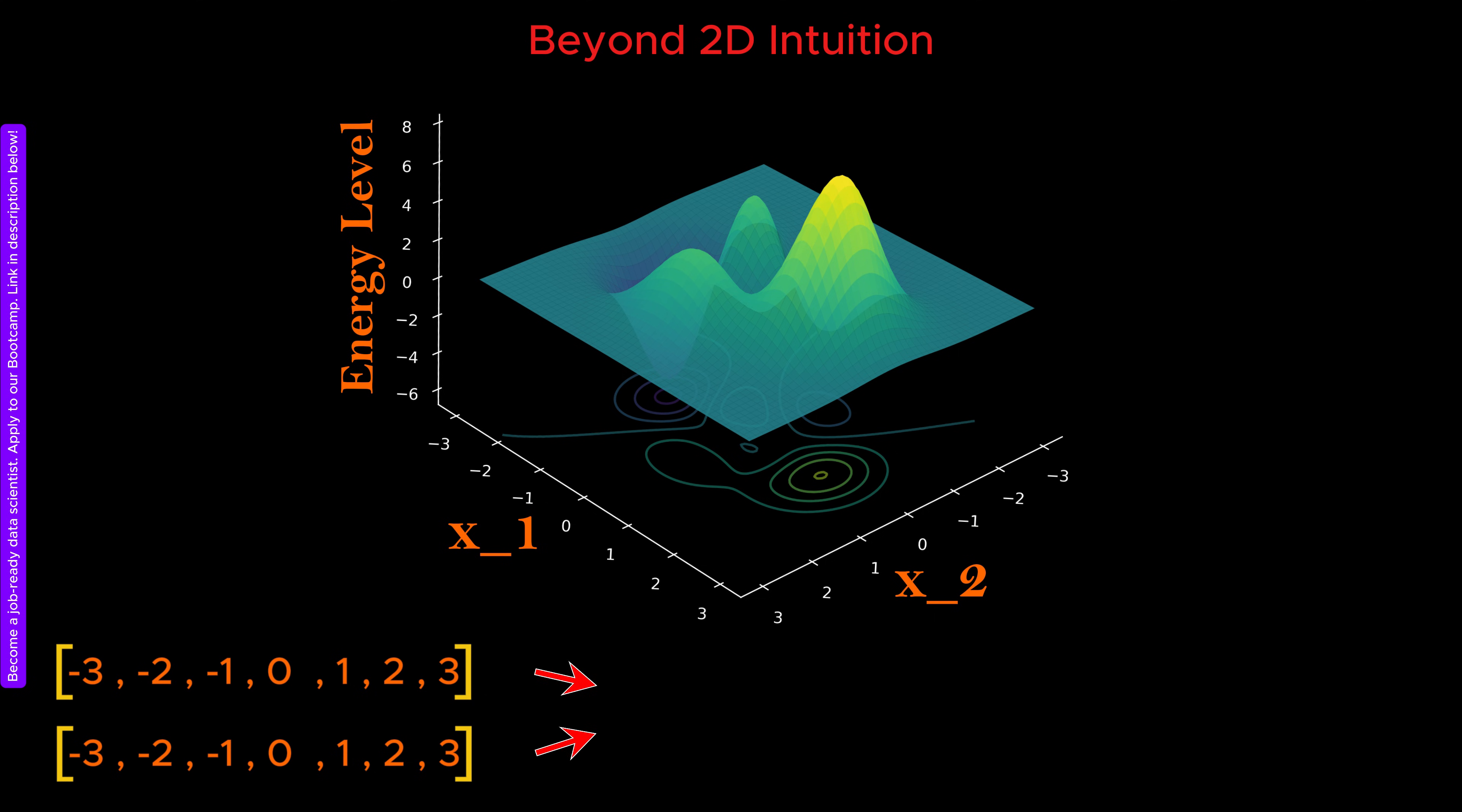For each pair of values, we compute the function and place a marker in three-dimensional space. The height of the marker represents the value of the function, while its position in the plane represents x sub 1 and x sub 2. This produces the familiar three-dimensional landscape plot.